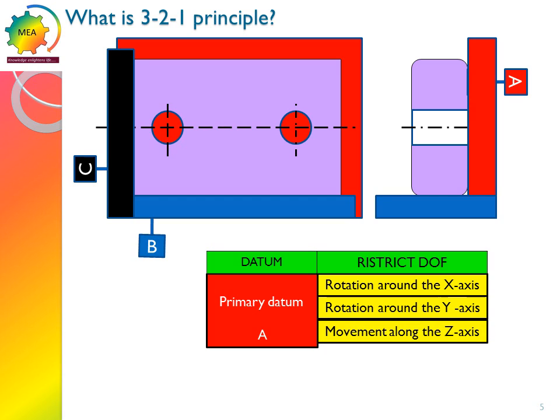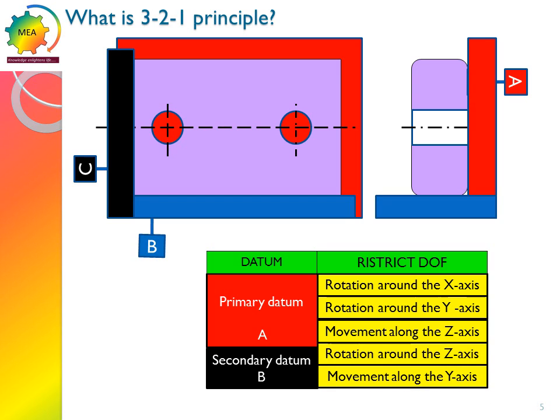And it will rotate movement along z-axis. Primary datum A restricts 3 degrees of freedom. Let us see the secondary datum B. Secondary datum B restricts the rotation around z-axis, movement along y-axis, and secondary datum restricts 2 degrees of freedom.